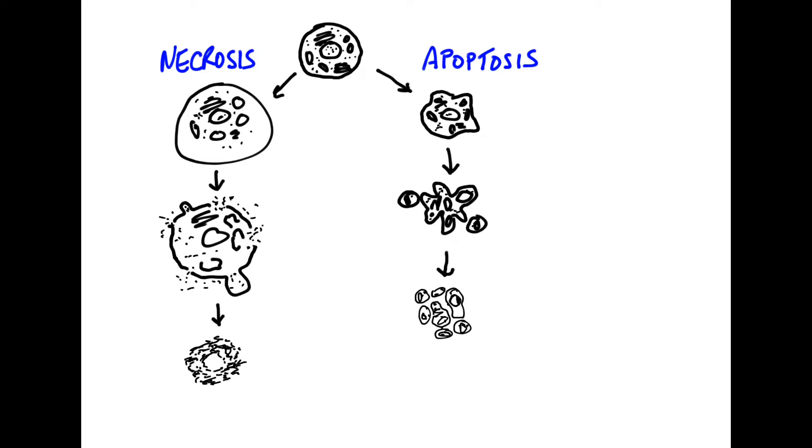Everything in apoptosis is designed to recycle as much of the material from the cell as can be recycled. What happens instead of the necrotic swelling of the cell is a shrinking of the cell. The nucleus shrinks as well and then eventually fragments.